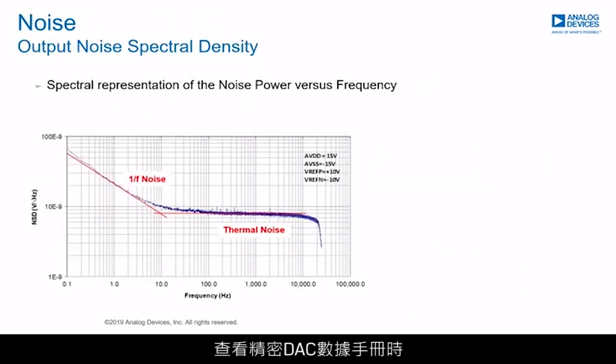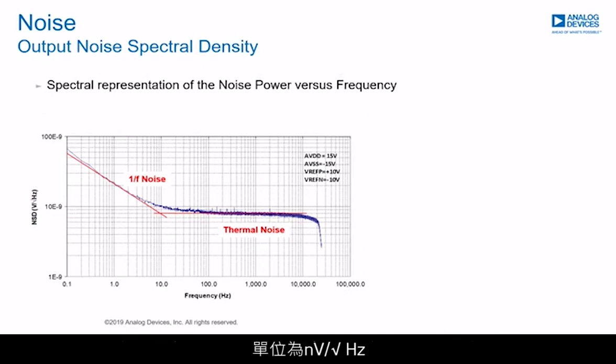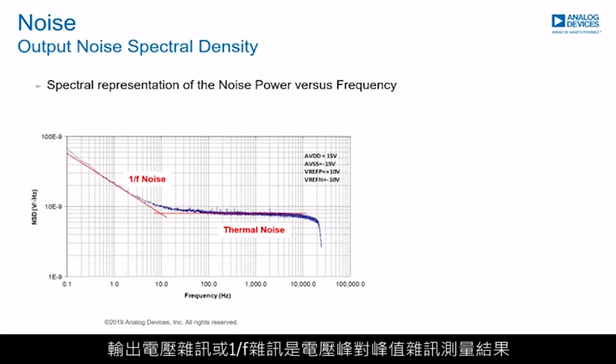When looking at a precision DAC datasheet, noise is specified in one or two ways: output noise spectral density, which is typically measured at 1 kHz and 10 kHz and specified in units of nanovolt per root hertz, and output voltage noise, or 1 over f noise, which is a voltage peak-to-peak noise measurement.